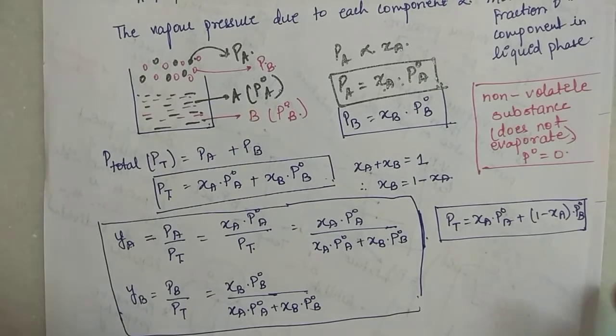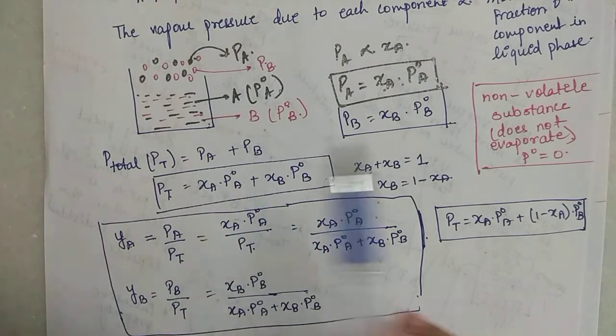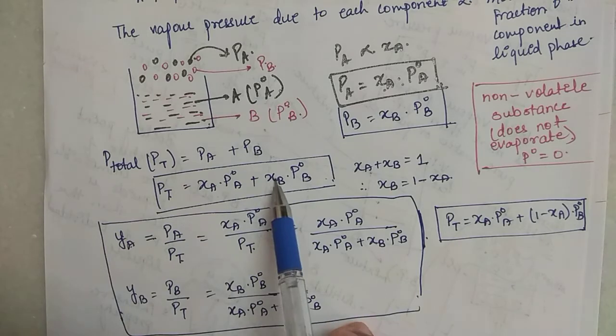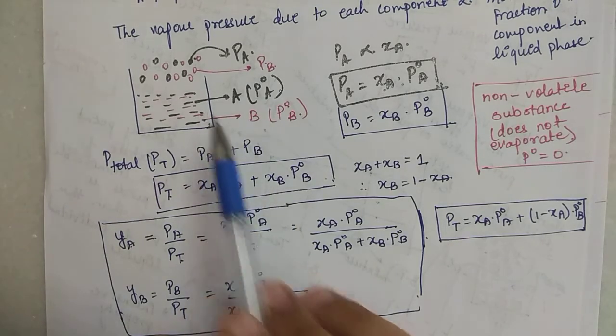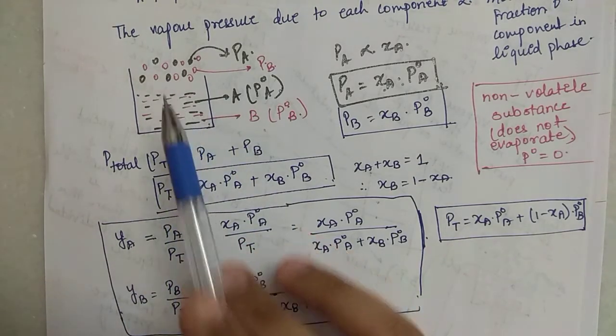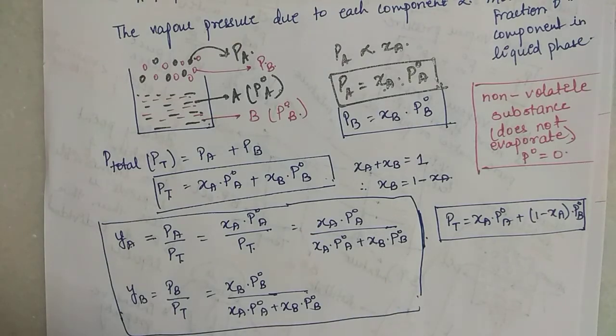Hello students, in this video we will continue further with liquid solutions. In the previous video we had looked at what Raoult's Law is - what happens when you mix two miscible liquids, how vapor phase composition and liquid phase composition are found. These were the formulas derived in the previous lecture: xa and xb are the compositions in liquid phase, ya and yb are the compositions in vapor phase.